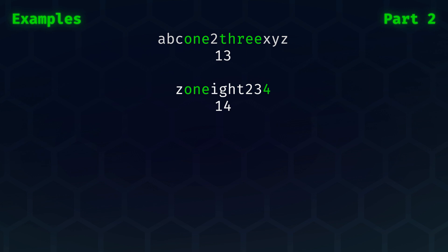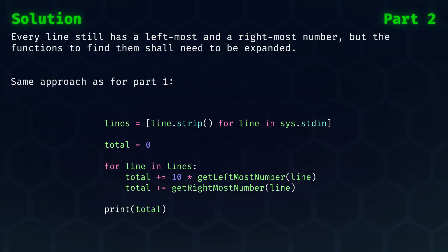Based on part one and these examples, do you see how you can modify your code to solve part two? Let's dive into the solution. What the problem statement asks of us is not much different than for part one, it's just that the definition of what is the leftmost or rightmost number is changed. So let's use the same approach and functions as for part one, but let's expand them.